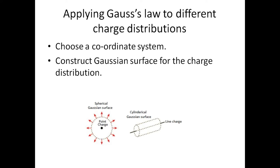Now we are going to see the steps involved in finding electric field intensity and electric flux density using Gauss law. The first major step is to choose a suitable coordinate system. The type of coordinate system depends upon the type of charge distribution. For example, if we have a point charge, we choose the spherical coordinate system. If we have a line charge, we choose a cylindrical coordinate system.